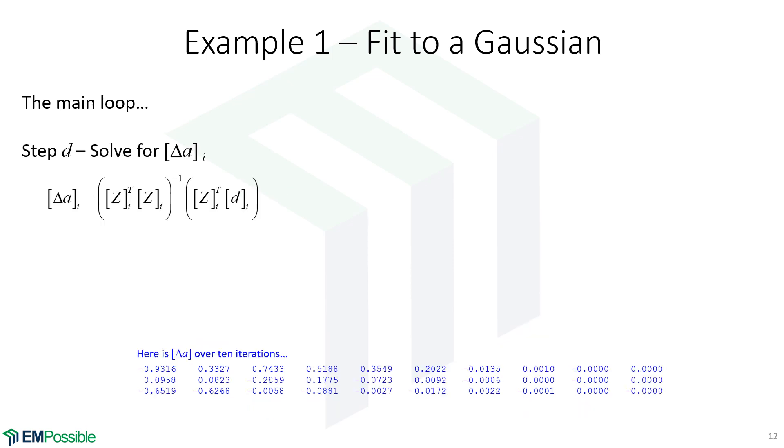Once we have the Z built, and we've already calculated our D, we can use least squares and calculate delta A. This is by how much we should be changing our parameters. And so, here's by how much we need to change it after the first iteration, and we can see that through 10 iterations, the change in these parameters are getting smaller and smaller. And it's from these, that will be our convergence criteria. When the change in those parameters falls below some threshold, we are done.